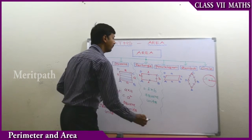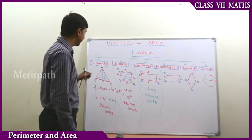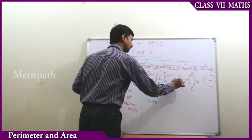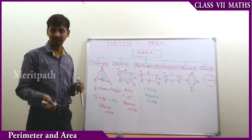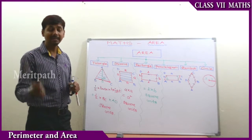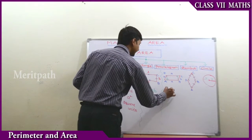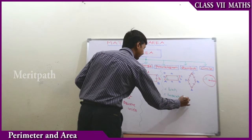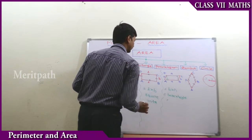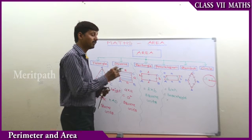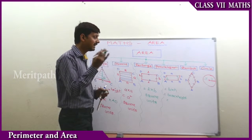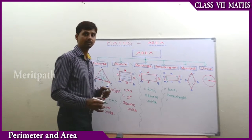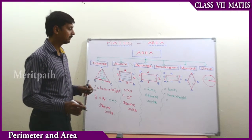Let's go to the next one: base into height. We defined height previously — it should be the perpendicular height only, the line making a right angle with the base. Either this height or that height, we can take any one. The height is the green colored line drawn perpendicular to the base. If you take the base as AD, then the height will be perpendicular to it. In this manner we find out the height of the parallelogram. So area of parallelogram equals base into height.